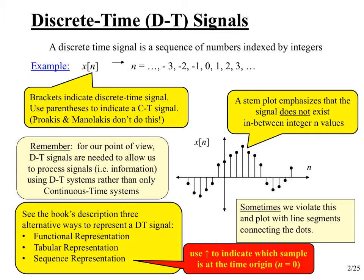If you take the index integer times T_s, the sampling interval, you'll find the time point at which that sample came from. But sometimes we get discrete time signals without knowing if they came from samples — we may have just created them. So you should not necessarily think that a discrete time signal had to come from sampling. When presented this way, we have no idea what the sampling rate or interval is.